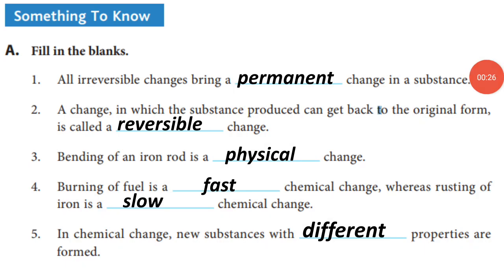Third, bending of an iron rod is a dash change. Answer: Physical. Fourth, burning of fuel is a dash chemical change, whereas rusting of iron is a dash chemical change. Answer: Fast and slow.